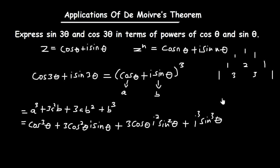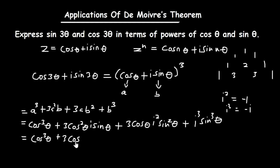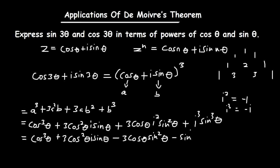Now, recall that i squared equals negative 1 and i cubed equals negative i. So substituting, this becomes: cos cubed theta plus 3 cos squared theta times i sine theta, minus 3 cos theta sine squared theta, minus sine cubed theta times i.